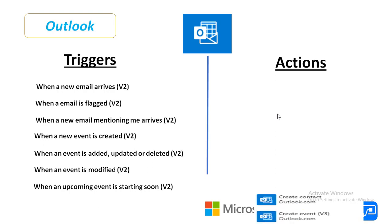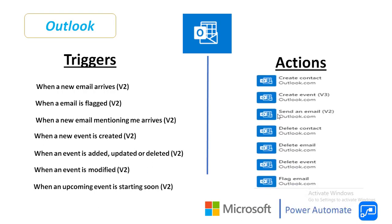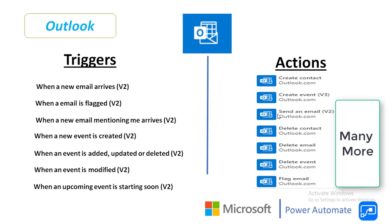Outlook is also one of the popular connectors in Power Automate. Along with triggers, we can see the actions. There are a lot of actions. I have listed a few: create contact, create event, send an email, delete contact, delete email, delete event, and flag email. Many more actions are available for Outlook along with the triggers.